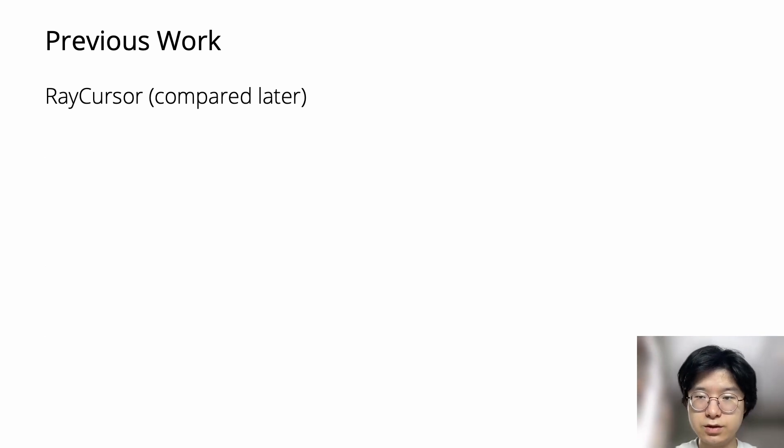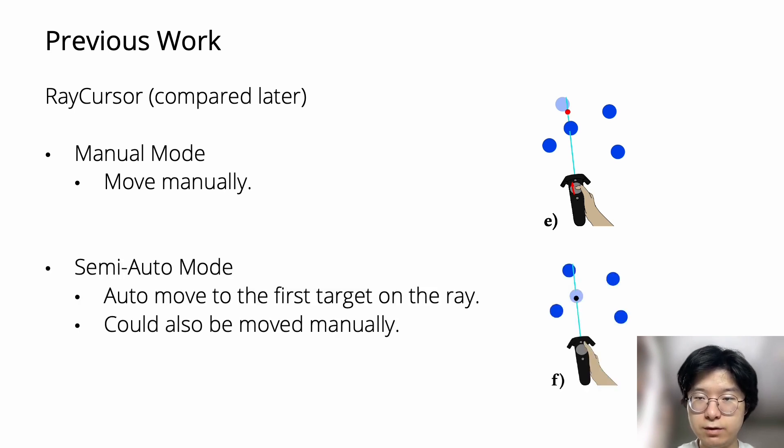RayCursor has two modes. For manual mode, the cursor can be moved manually based on the finger movements. For semi-automatic mode, the cursor will be automatically moved to the first target on the ray, and the user can also adjust the cursor manually.